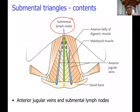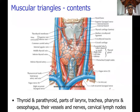The submental triangle's most important contents are the submental lymph nodes and the initial tributaries of the anterior jugular veins. The muscular triangle contains the infrahyoid muscles already described, as well as the thyroid and parathyroid glands, parts of the larynx, trachea, pharynx, esophagus, their vessels and nerves, and the cervical lymph nodes in that area.